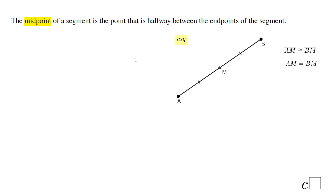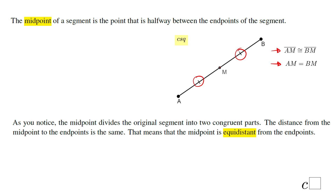Welcome or welcome back at C-squared. In this lesson we talk about the midpoint. The definition of a midpoint: a midpoint of a segment is the point that is halfway between the endpoints of the segment. You notice here this point M is halfway — we know that because these two segments are congruent, they have the same measure. Another key word to remember in geometry is equidistant: point M is equidistant, the same distance from point A and from point B.